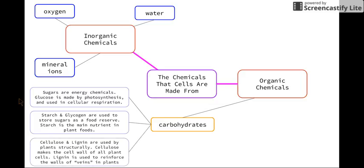And lastly, cellulose and lignin. So these are used by plants structurally. Cellulose makes up the cell wall of all plant cells, and lignin is used to reinforce the walls of the veins in plants. So even though we consume them when we eat plant material, they're not really of much use to us in comparison to the sugars, starch, and glycogen.